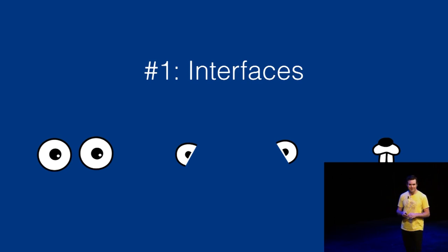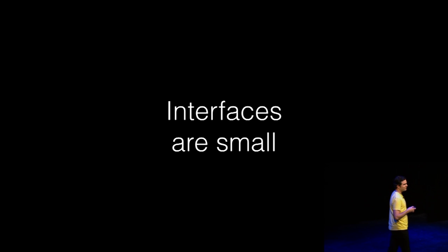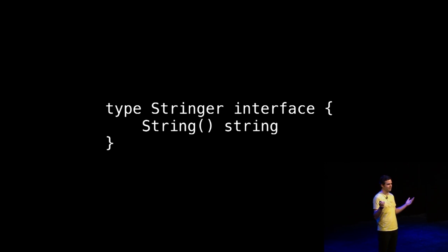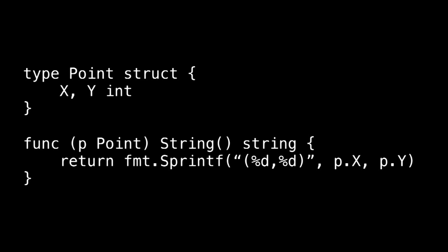The first thing that I love are interfaces. Go interfaces are small — this is the canonical Go interface, the stringer interface. They usually have one or fewer methods, and this kind of smallness is great for flexibility, and they're easy to understand and easy to implement. Interfaces are satisfied implicitly — this point type is a stringer simply because it implements the string method. And importantly, interfaces are composable. They encourage composability.